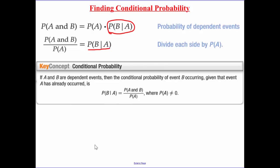So this is what conditional probability is. A and B are dependent events. The probability of event B occurring, given that A has already occurred, is this formula right here.